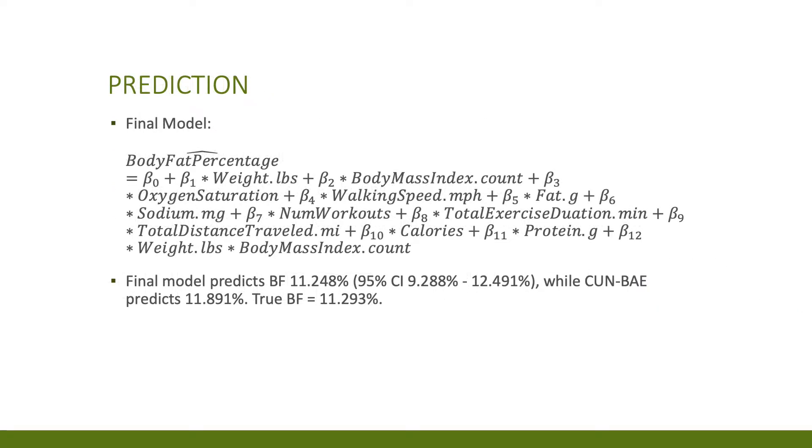The final model was constructed by performing weighted least squares regression to correct the non-constant variance and non-normality of residuals. The four influential points were also dropped, which is okay since the data set's number of records is greater than 10 times the number of parameters. An interaction term was also added between the correlated predictors. This final model predicts my body fat to be 11.25 percent, while the CANBE model predicts 11.89. As of last week, the true value was 11.29 when I measured it.